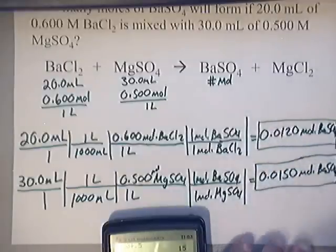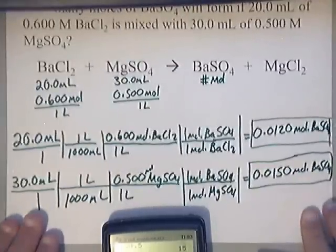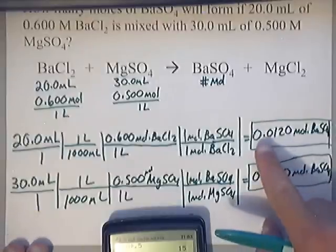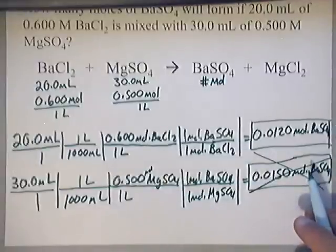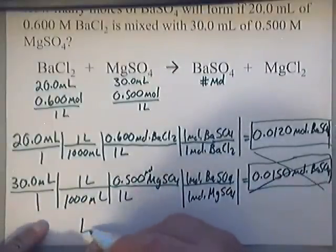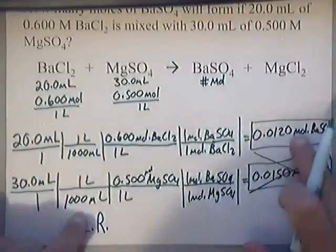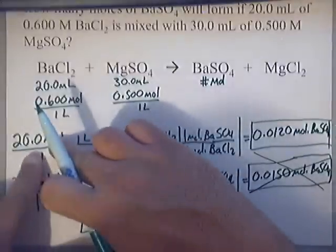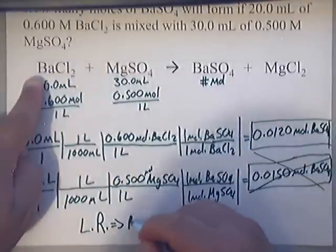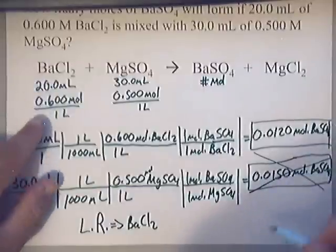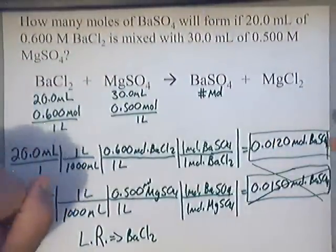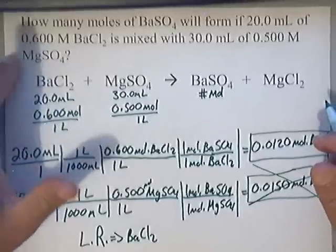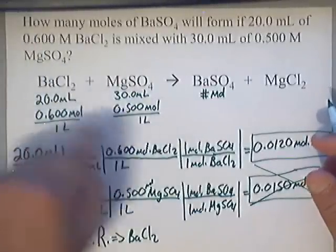And you remember from limiting reactant problems, when you do this, you pick the smaller one. The smallest one is the 0.0120. So this one's too big. So that's not our limiting. Our limiting reactant, if they ask us, would be the one that gave us this answer. The limiting reactant was the BaCl₂. But my answer is 0.0120 moles of BaSO₄. That's how many moles of BaSO₄ I could produce from this reaction, given the following quantities of these reactants.